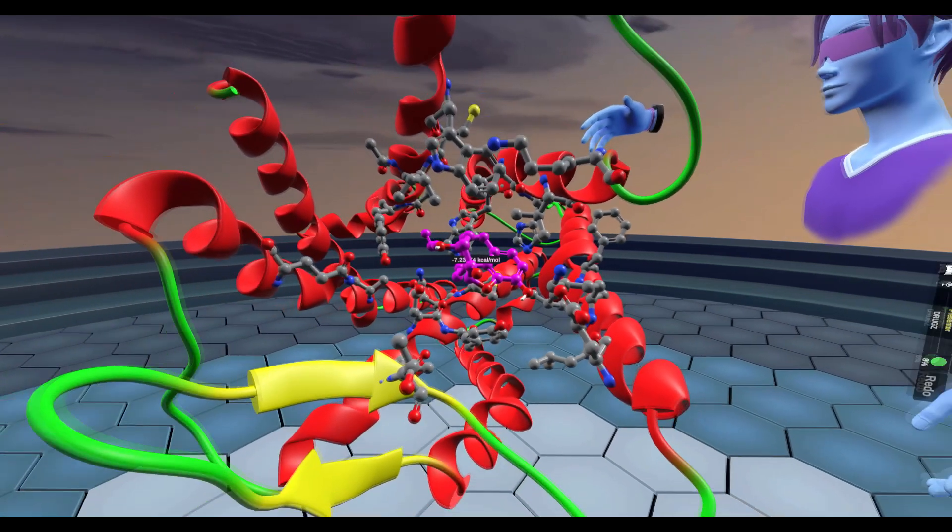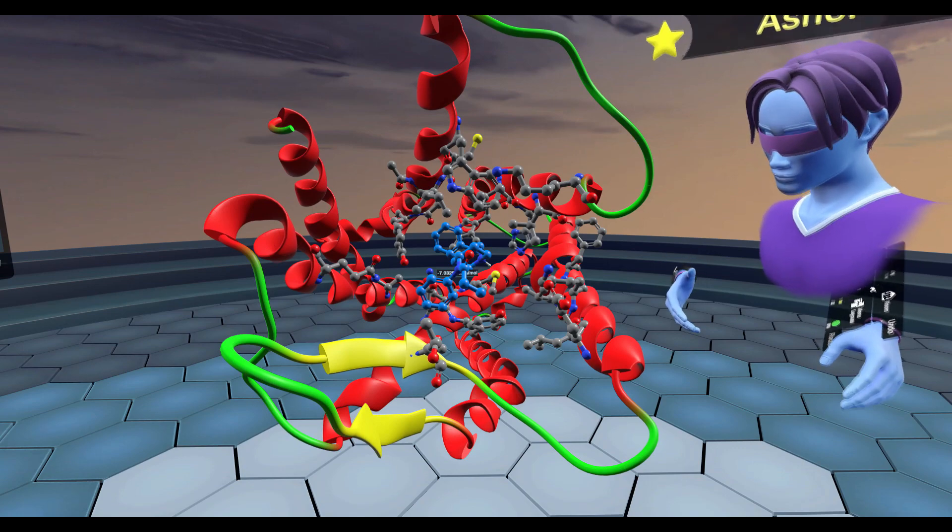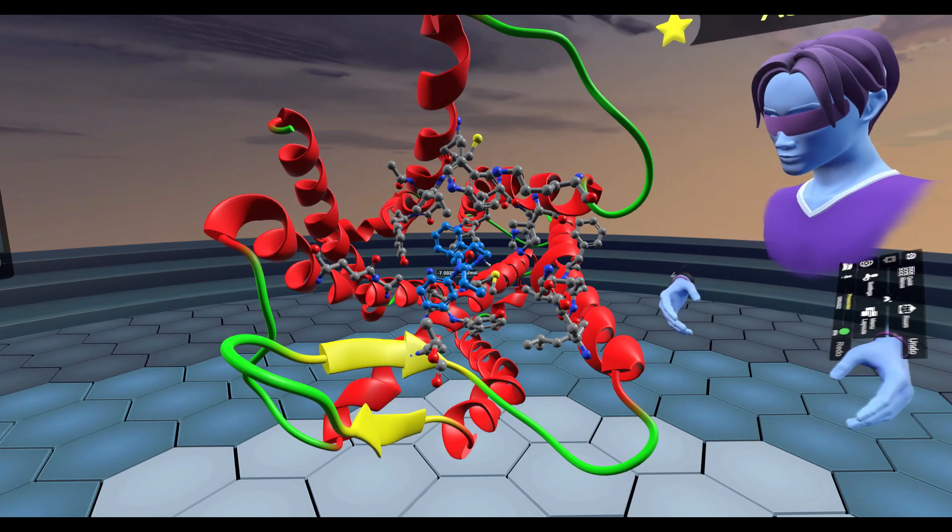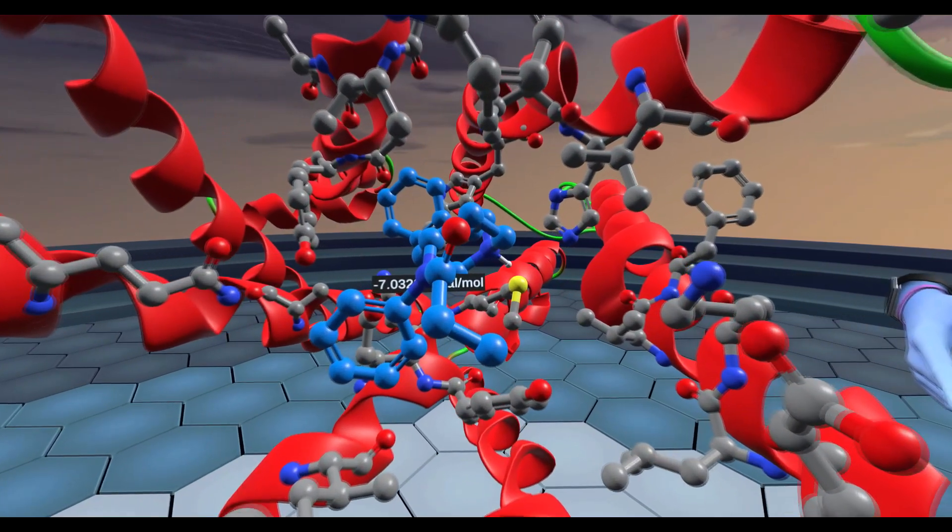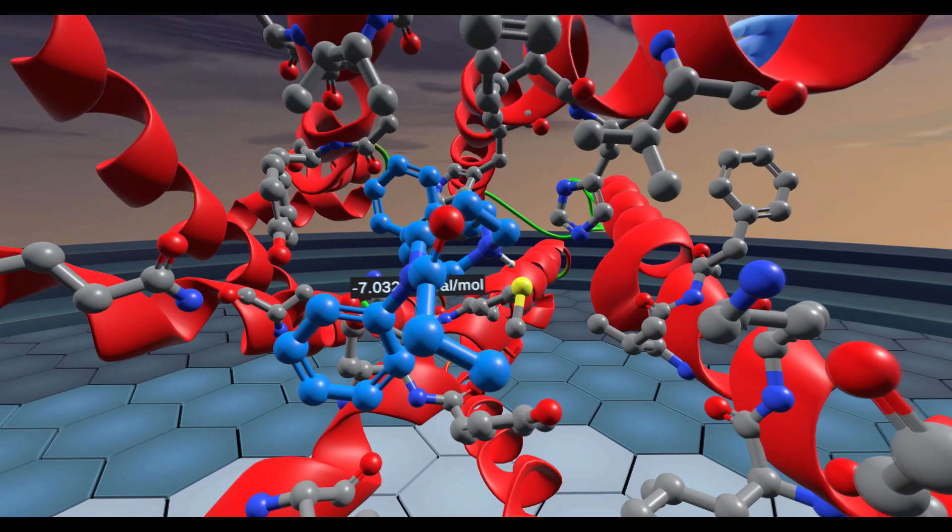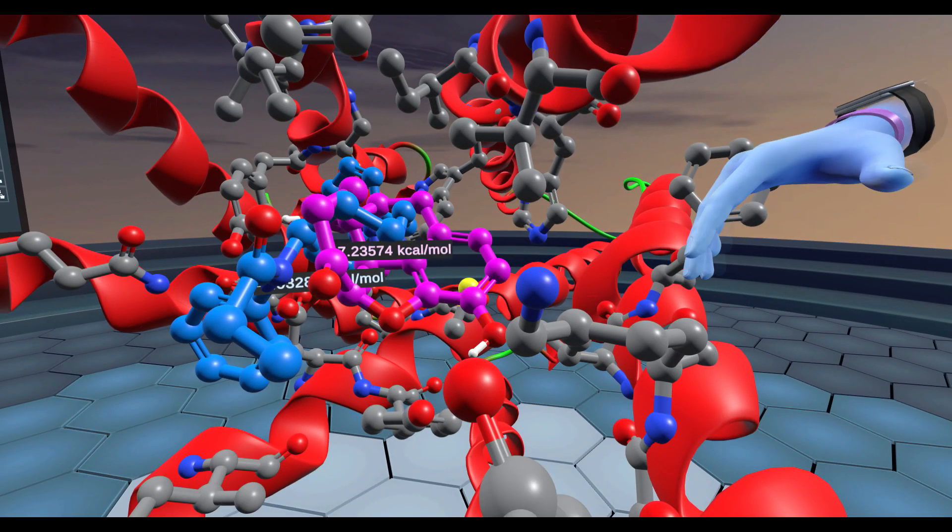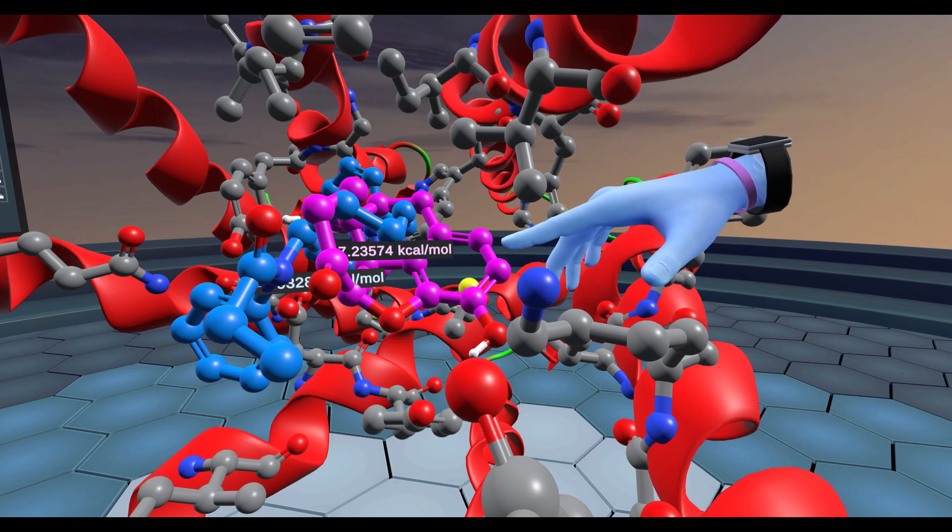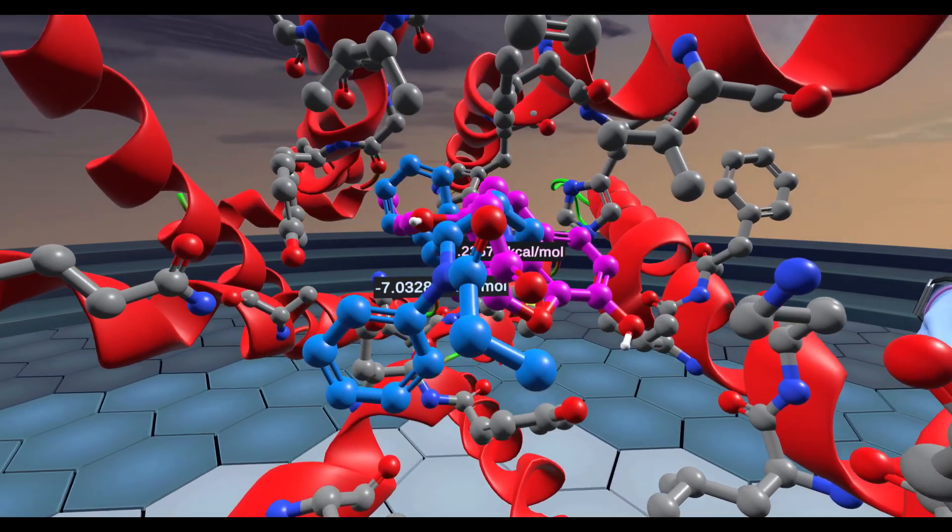And then if we take a look at fentanyl. So here's fentanyl inside the orthosteric binding pocket. We have a glide score of 7.03 K-cals per mole. And if we look back at the docking score for naloxone, because it has a higher docking score, it's likely to even displace fentanyl out of the mu-opioid receptor.